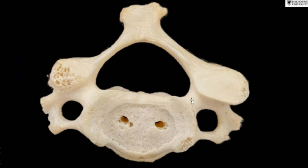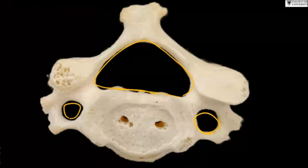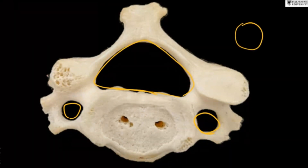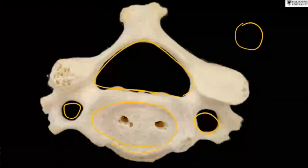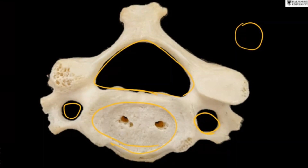This is a typical cervical vertebra. The striking feature is the presence of the foramen transversarium, which transmits the vertebral artery and vertebral vein. You can see the vertebral canal is triangular in shape — it was circular in thoracic vertebrae. The body is transversely oval and small because it is not bearing much weight like other vertebrae below.